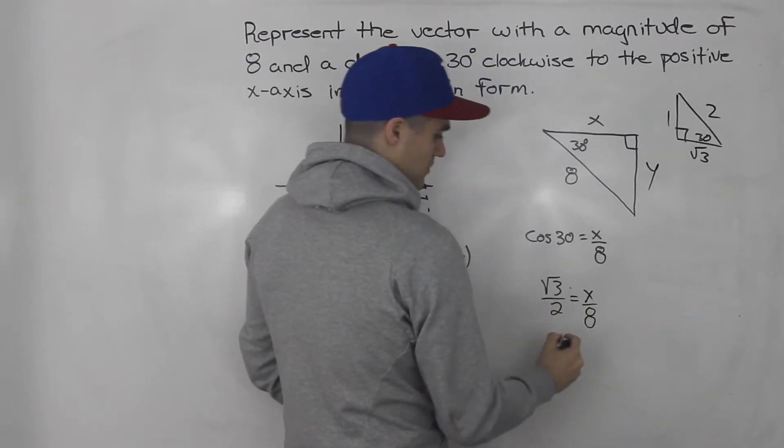And then cross multiplying, we'd have 2x equals 8 root 3. Divide both sides by 2. 8 divided by 2 would be 4. So we'd have 4 root 3. So that is the x value.